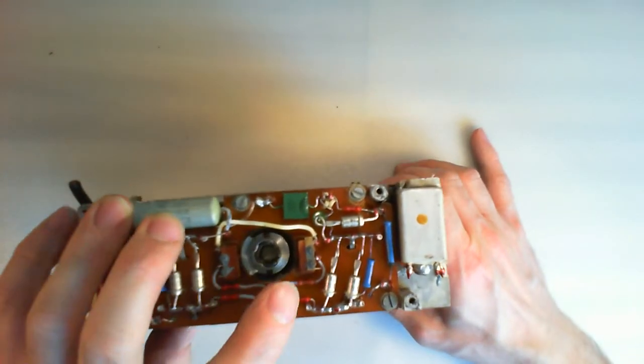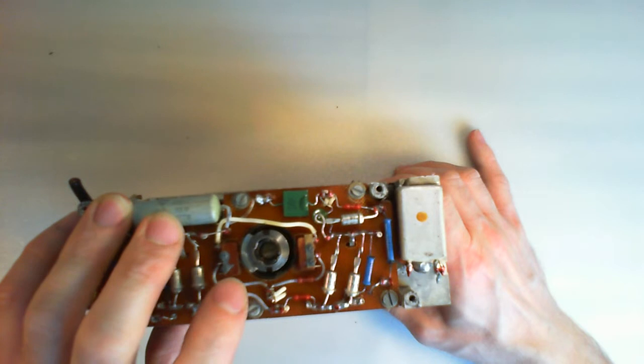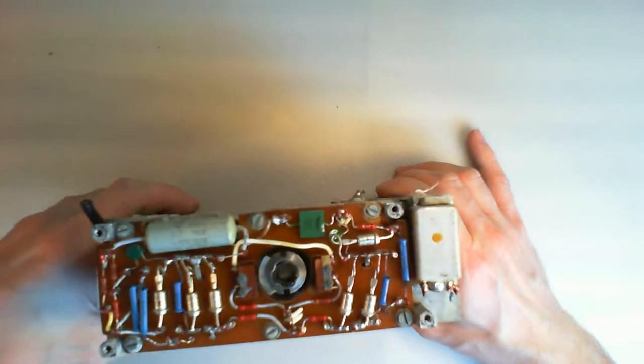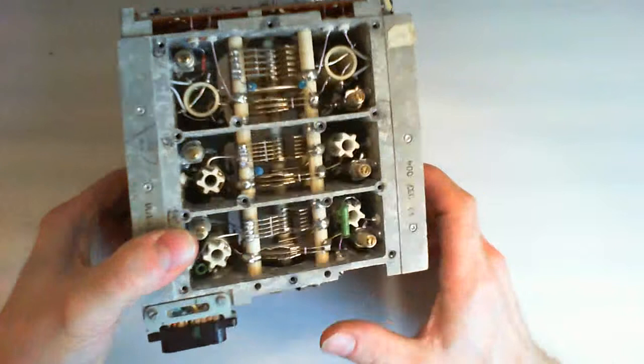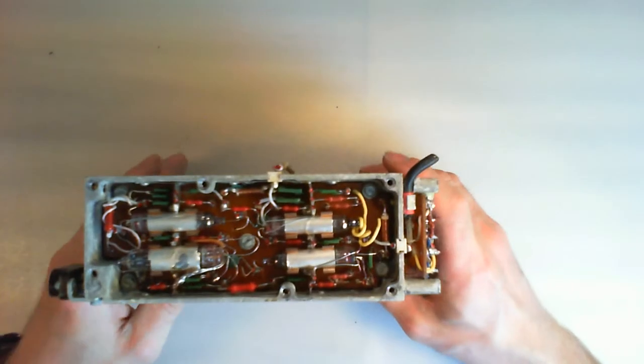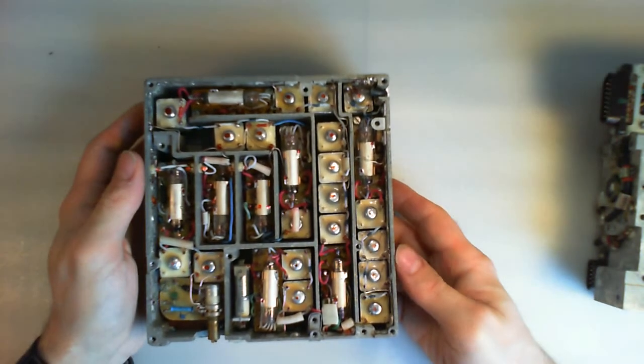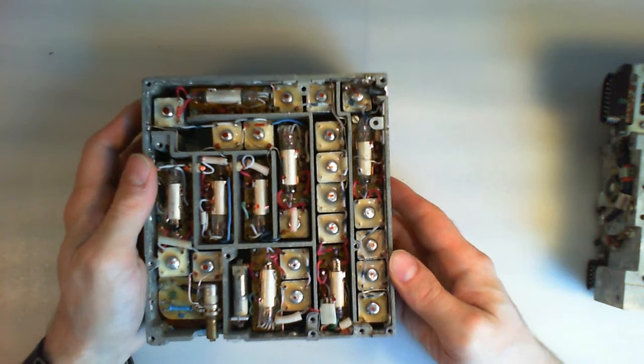So here you have two small micro switch keys and the end of the shaft. Other side, more tubes, same kind. So, the main module with all the brains, as we could say, of the radio.